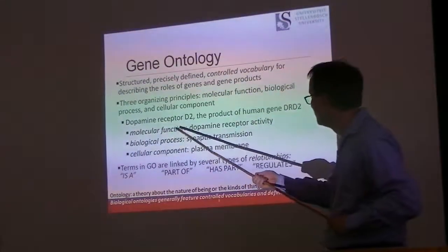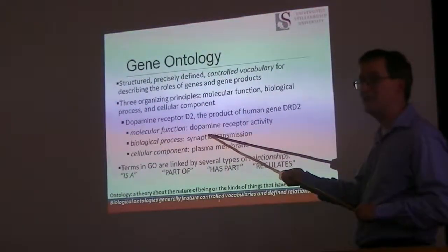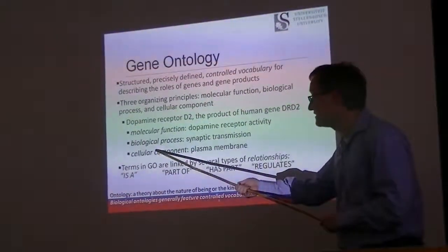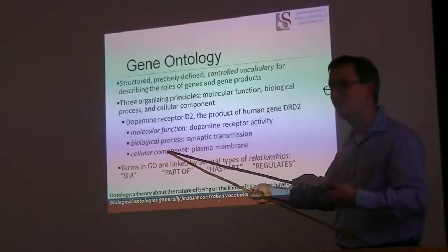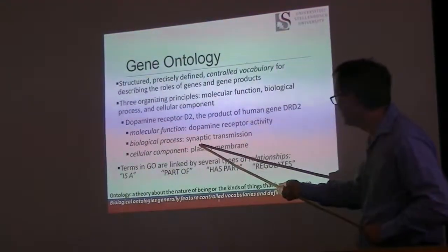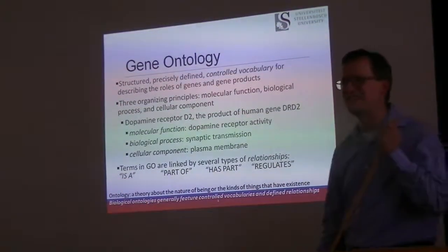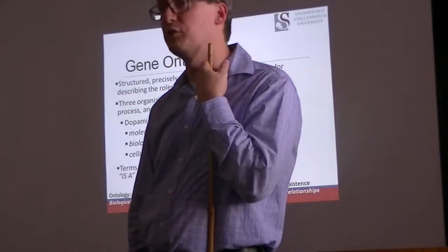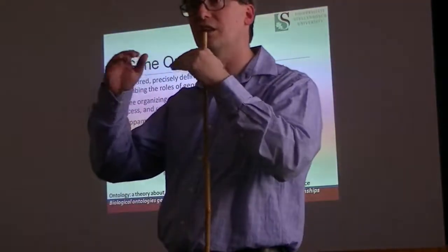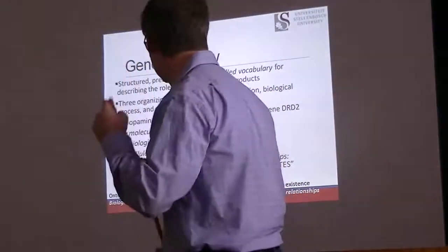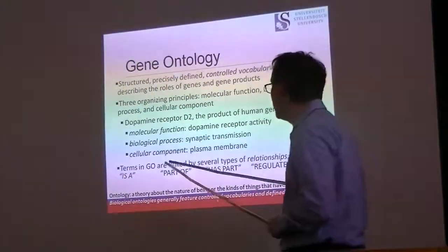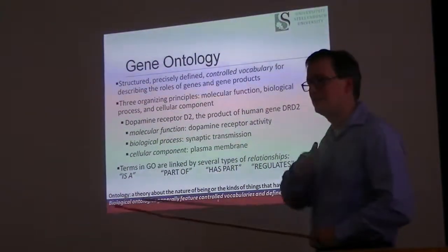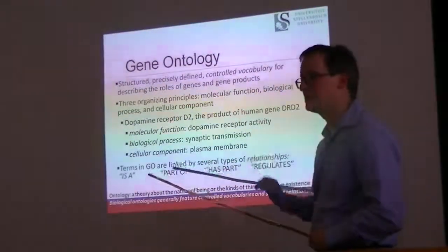Once we look in gene ontology for this dopamine receptor, we see that its molecular function is, unsurprisingly, a dopamine receptor activity. The biological process in which it fits contextualizes why dopamine reception matters: synaptic transmission. The communication among nerve cells. The synapses between nerves, these junctions between them, is the biological process in which this dopamine reception matters. And finally, cellular component: it sits in the plasma membrane.